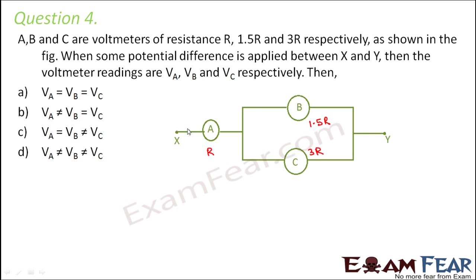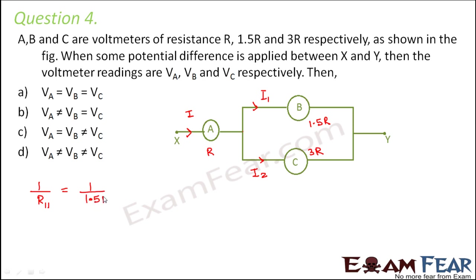Let us see the current distribution. Let us assume that current I is flowing along this line. As it reaches here, I1 will flow through B and I2 will flow through C. Now let us look at the equivalent resistance of the circuit. B and C resistances are in parallel combination. So 1 by R_parallel equals 1 by 1.5R plus 1 by 3R, which equals 2 plus 1 divided by 3R, equal to 3 by 3R. Therefore R_parallel equals R.